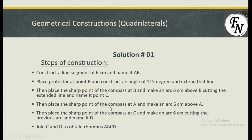After that, place the sharp point of the compass at A and make a 6 cm arc. Then place the sharp point of the compass at C and make an arc of 6 cm cutting the previous arc drawn from A. Name this intersection point D. Then join CD to obtain the rhombus ABCD.